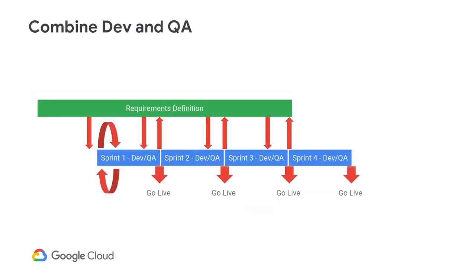The first important tactic to avoid scrum fall is to merge development and QA into one sprint. This likely means you will take on less work in the sprint to give time for bug fixing. But with testing and fixing merged into the sprint, you have tested and ready-to-release functionality at the end of each sprint — this gives us the real ability to pivot.